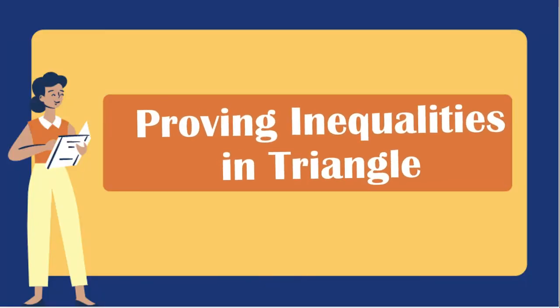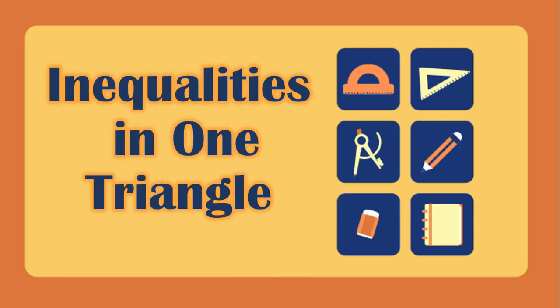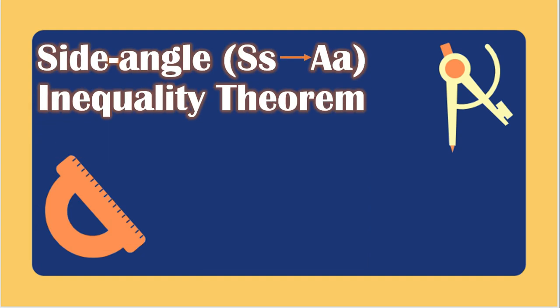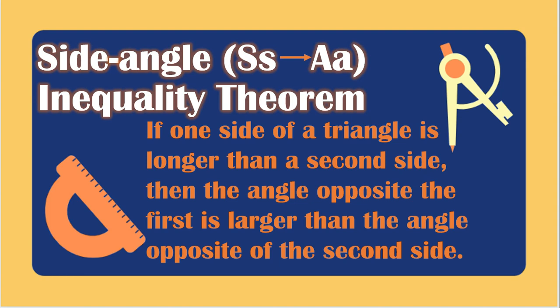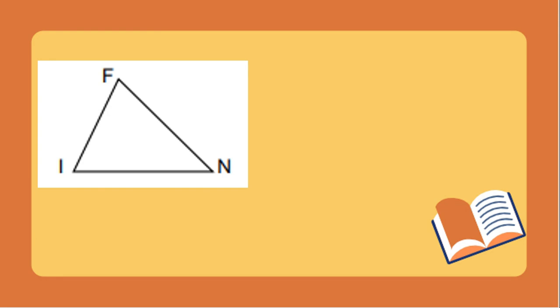Module 2 is all about proving inequalities in triangles. Let us start with inequalities in one triangle. We have the Side-Angle Inequality Theorem, which states that if one side of a triangle is longer than a second side, then the angle opposite the first is larger than the angle opposite the second side. In this figure, the measurement of IN is 10 and the measurement of FI is 9.